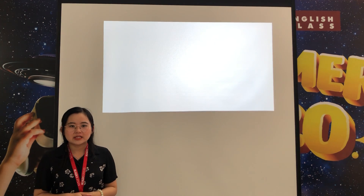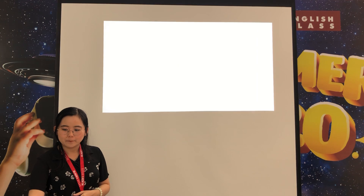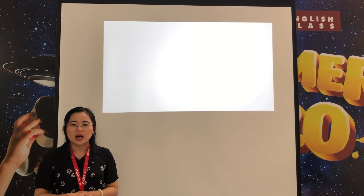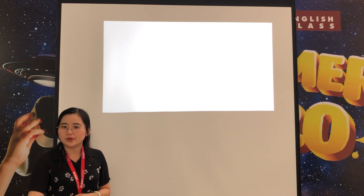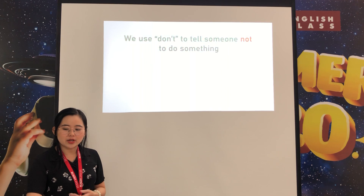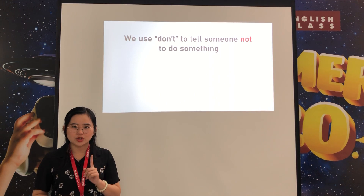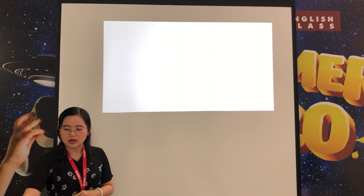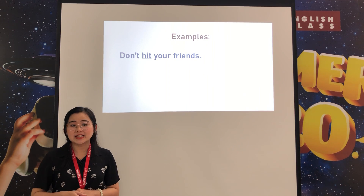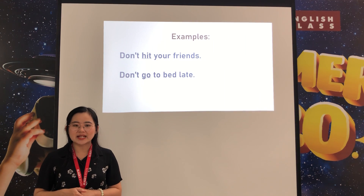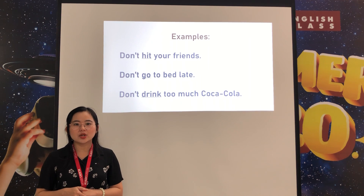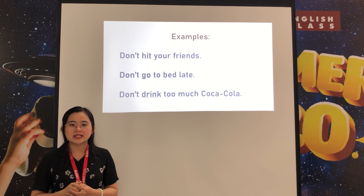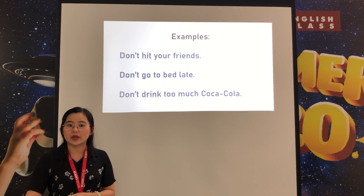The next grammatical point we will review is DON'T. As you already know, we use DON'T to tell someone not to do something. The structure is: DON'T plus verb. Look at the picture — for example: 'Don't hit your friends,' 'Don't go to bed late,' 'Don't drink too much.' DON'T with verb — we use it to tell somebody not to do something.